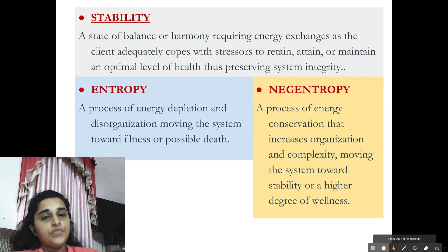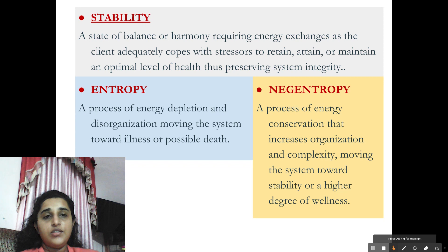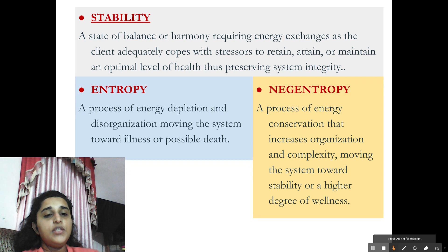Now we are going to see certain terms related to this system. First is stability — a state of balance or harmony requiring energy exchanges as the client adequately copes with stressors to retain, attain, or maintain an optimum level of health; this is preserving system integrity. Next is entropy, a process of energy depletion and disorganization, because of which the system moves toward illness or possible death. Negentropy is a process of energy conservation that increases organization and complexity, so the system moves toward stability or wellness.